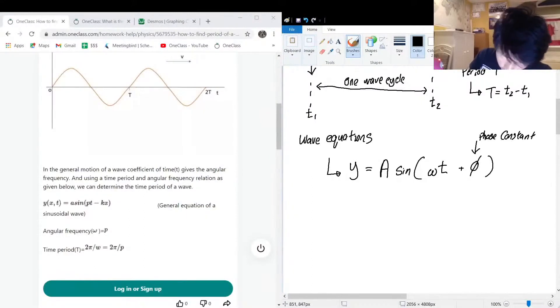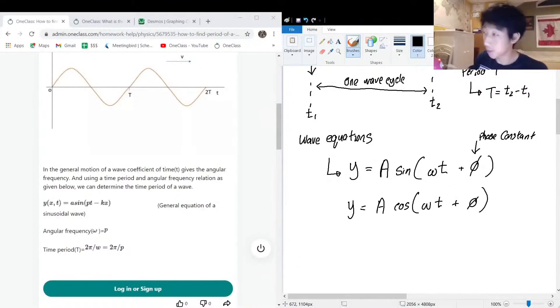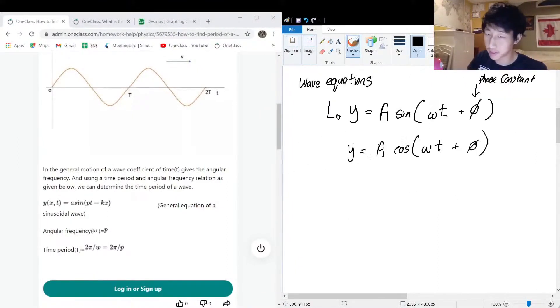You might also see it as a cosine as well, not as common, but cosine is commonly seen as well, but it's less popular than sine. People like sine. So we want to extract the angular frequency.